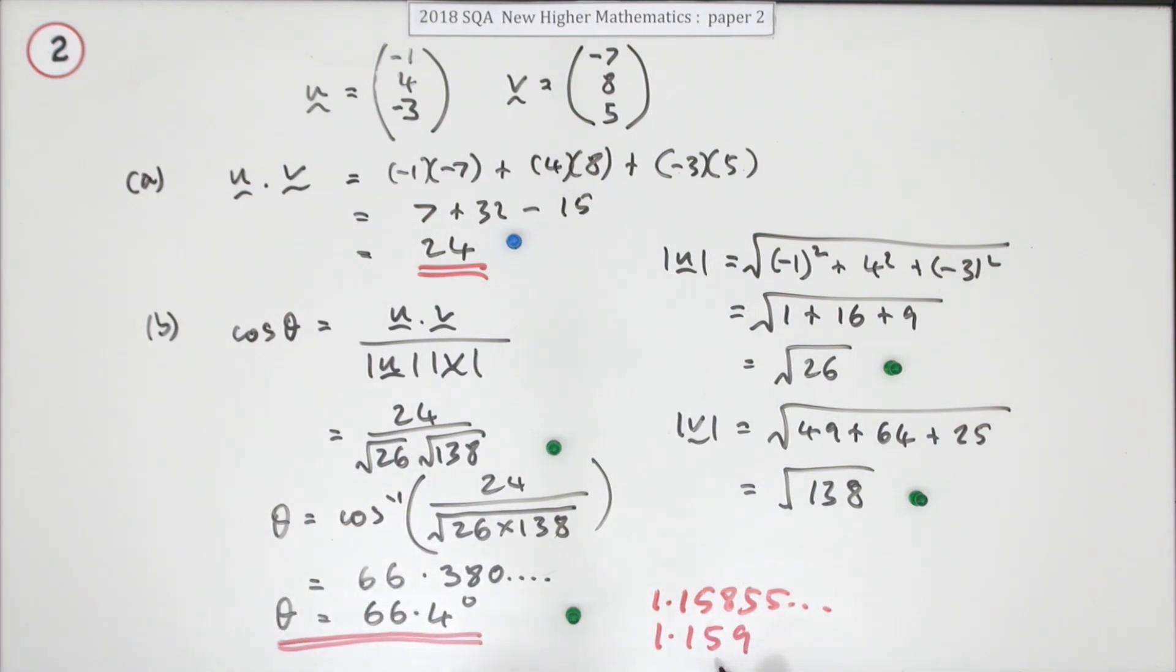But if you did put it in radians, you'd have to make sure it couldn't be confused with degrees. So you'd have to make sure you had either the degree sign or not, and preferably just put 'radians' after it.